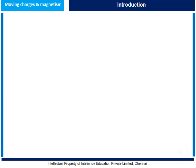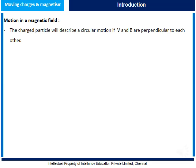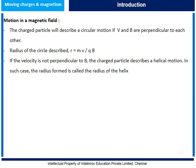Let us understand motion in a magnetic field. A charged particle will describe a circular motion if the velocity vector and field vector are perpendicular to each other. The radius of the circle described is equal to mv divided by QB. If the velocity vector is not perpendicular to the field vector, the charged particle describes a helical motion, and in such a case the radius formed is called the radius of the helix.